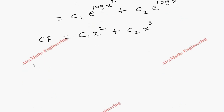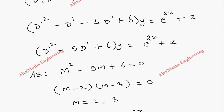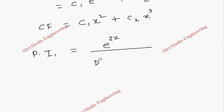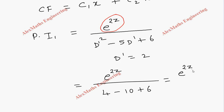Now coming to the particular integral. Particular integral 1 is e^(2z) divided by D'² − 5D' + 6. As per the procedure for e^(az) form, we substitute D' = 2 (since a = 2). The denominator becomes 4 − 10 + 6 = 0, giving e^(2z)/0, so we get zero in the denominator.